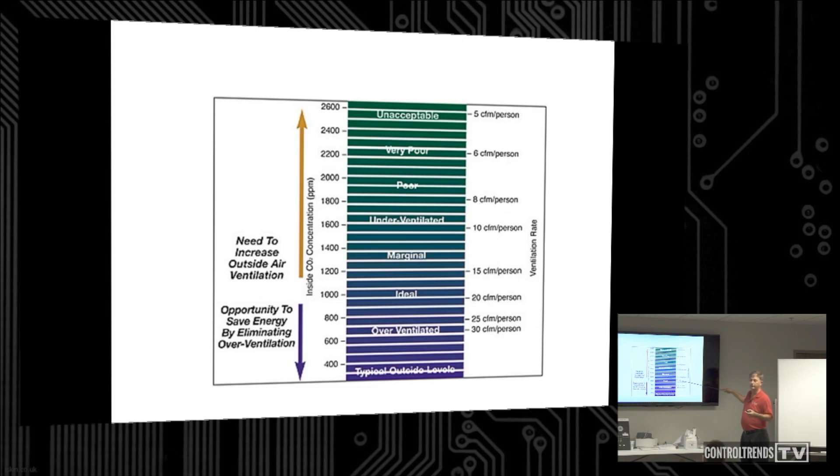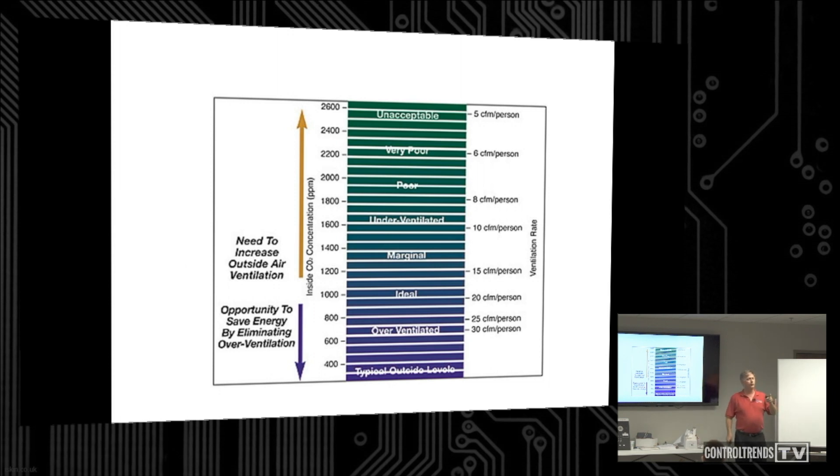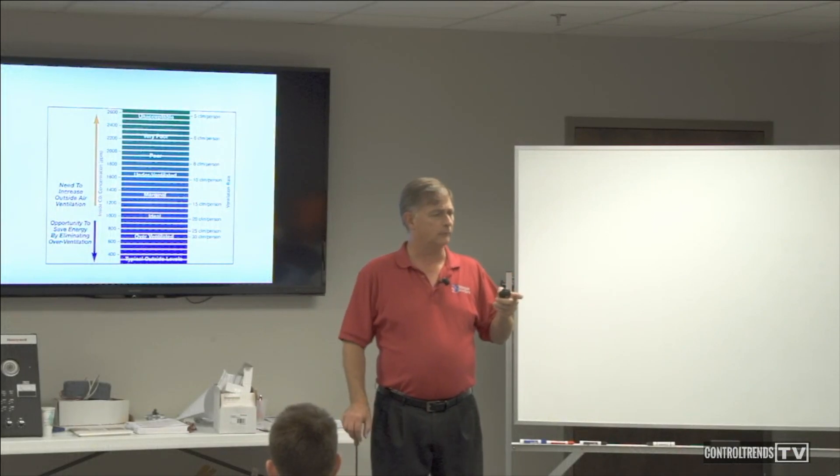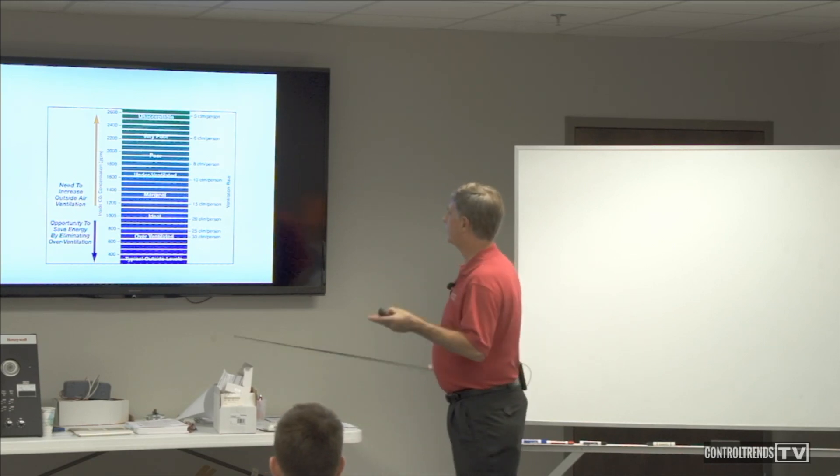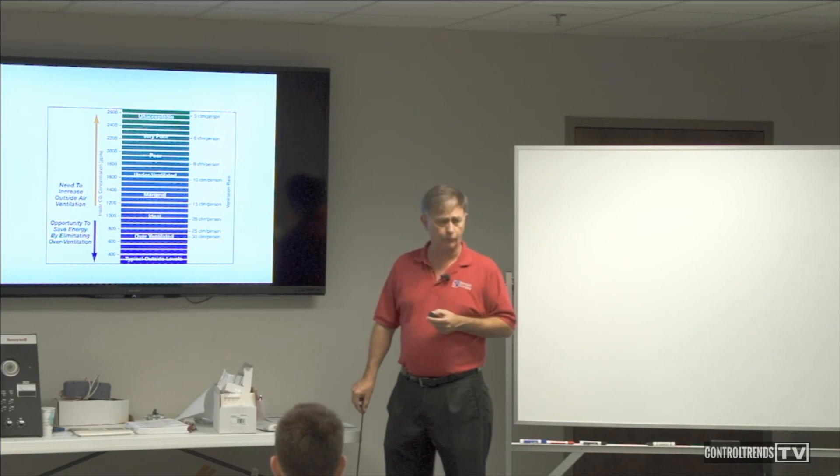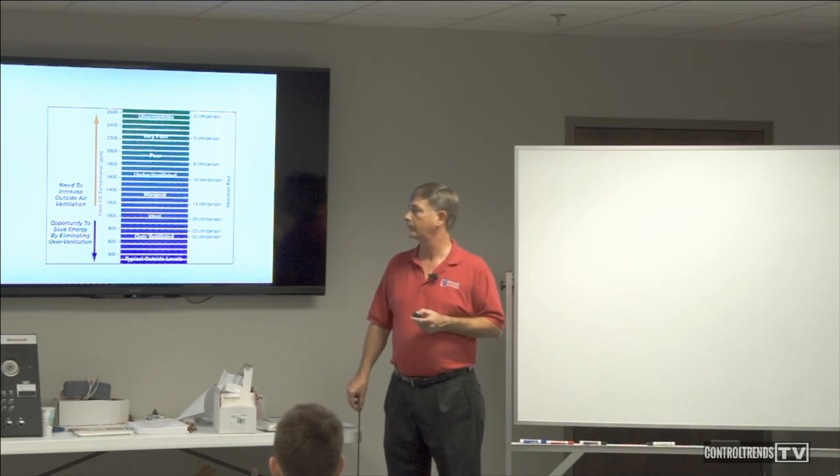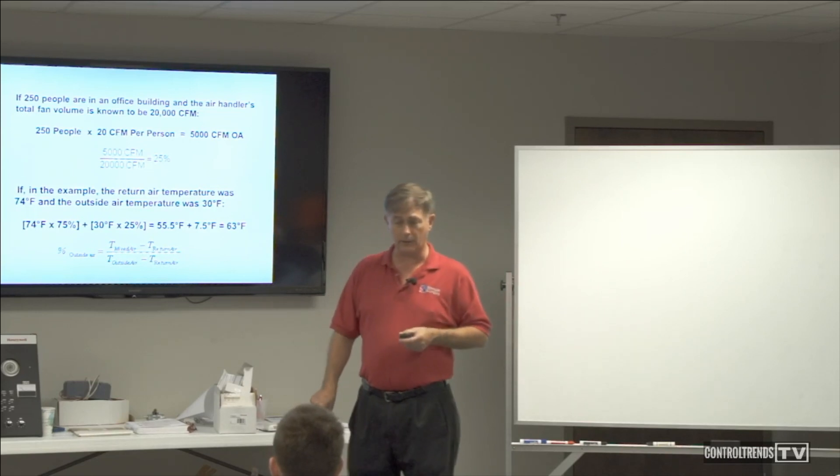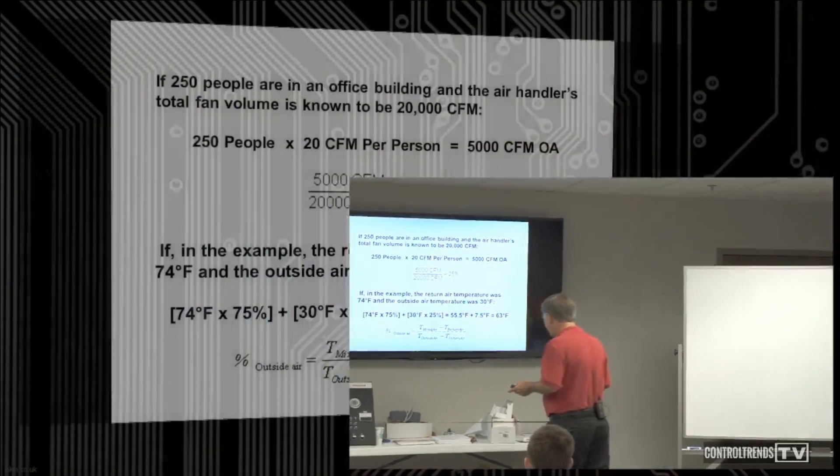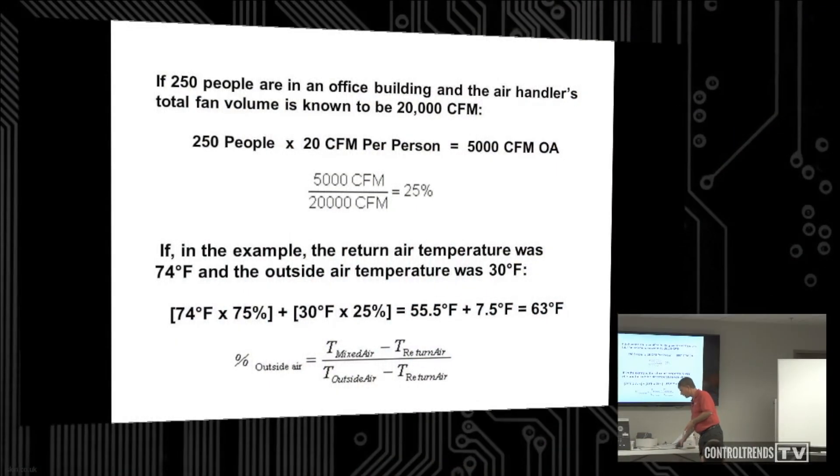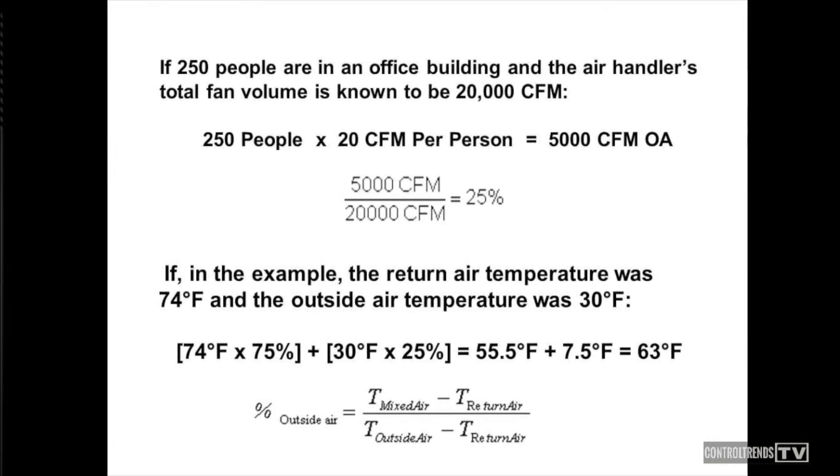That corresponds to this table right here. And we have guidelines in our codes, mechanical codes, that for office, for restaurants, for schools, they recommend a certain CFM per person of ventilation air, of fresh air, that outside air. Depends on the application. Now, we can do a little bit of math to see where we are because sometimes just because we have outside air dampers on our buildings, doesn't mean that we have the proper amount of outside air.